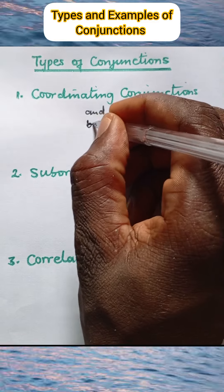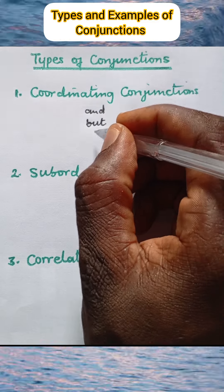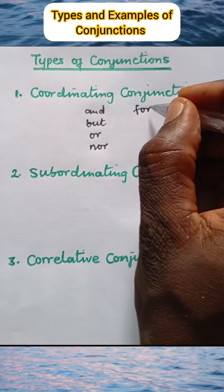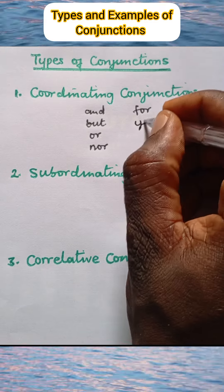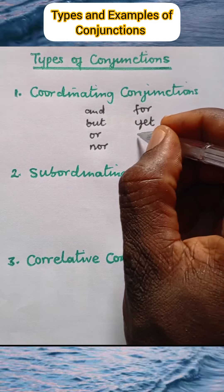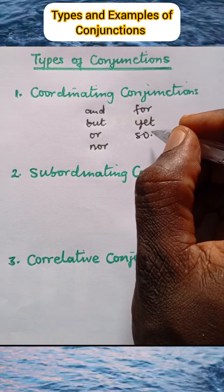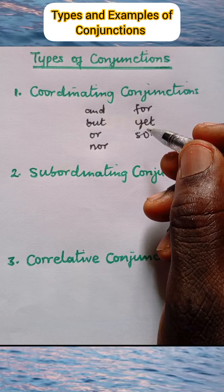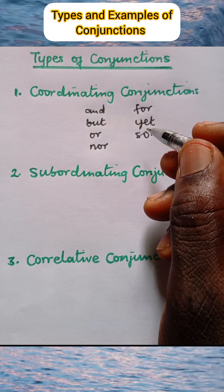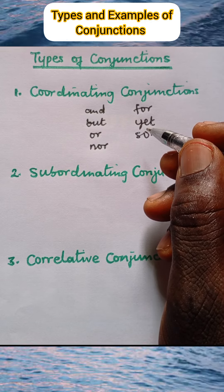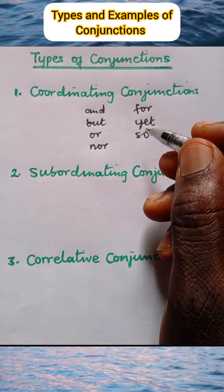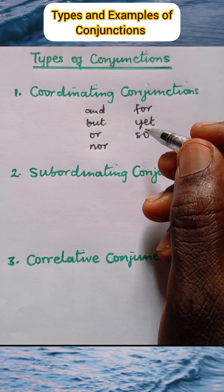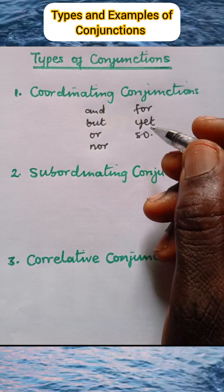We have: and, but, or, nor, for, yet, and so. Coordinating conjunctions are used to join two words, two phrases, or two clauses of equal rank, such as main clause to main clause.